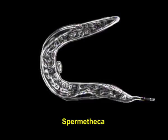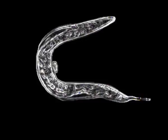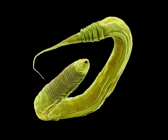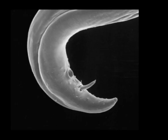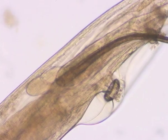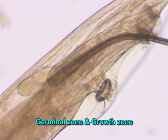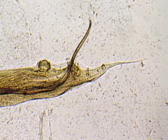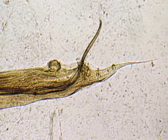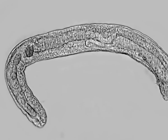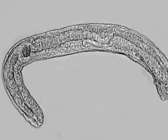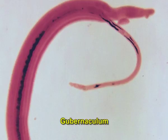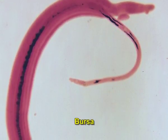There is frequently a spermatheca (for storage of spermatozoa) situated at the anterior end of the oviduct. The male reproductive system may consist of one or two gonads; if there are two, the testes are opposed. The male gonad consists of the testes, germinal zone, growth zone, the seminal vesicle for storage of sperm, and the vas deferens which functions as an ejaculatory duct and opens into the cloaca. The male reproductive system has various copulatory structures associated with it — most notably the spicules, the gubernaculum, and in some forms the caudal alae (also called bursa).